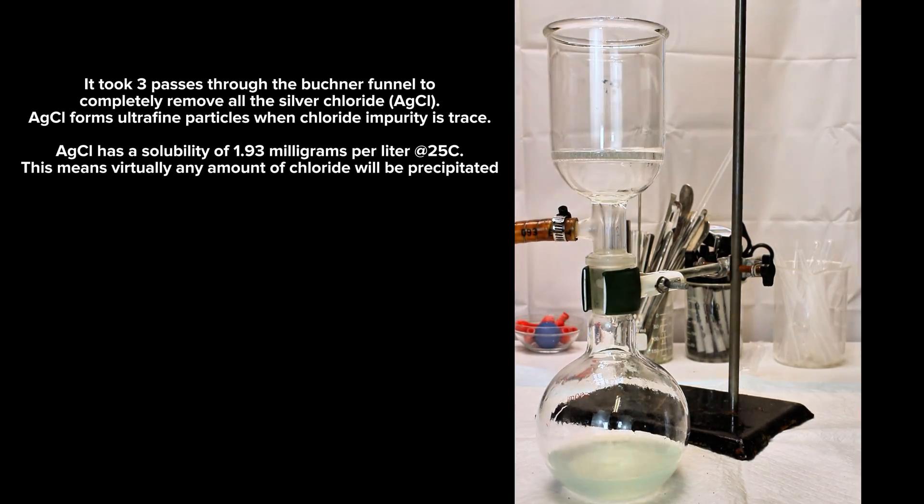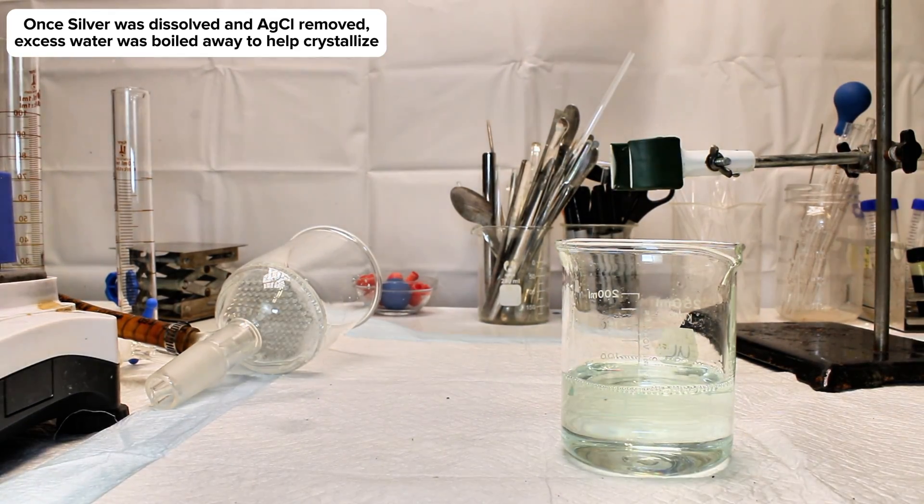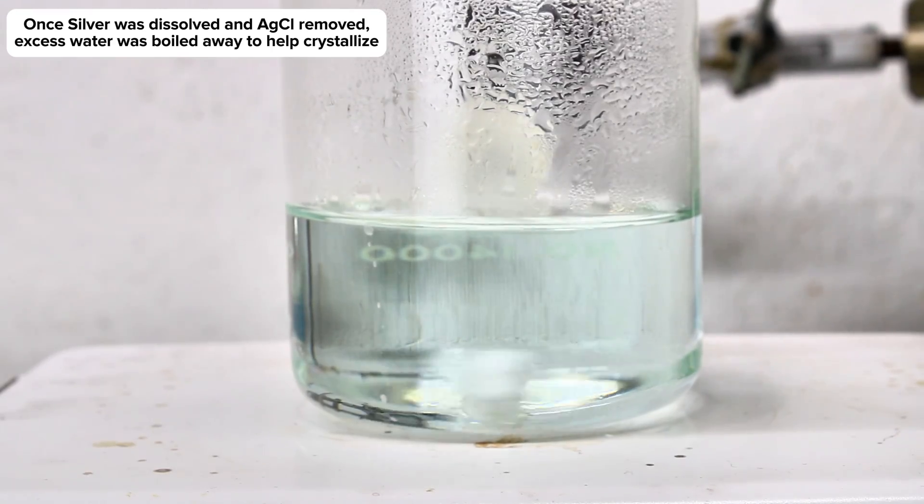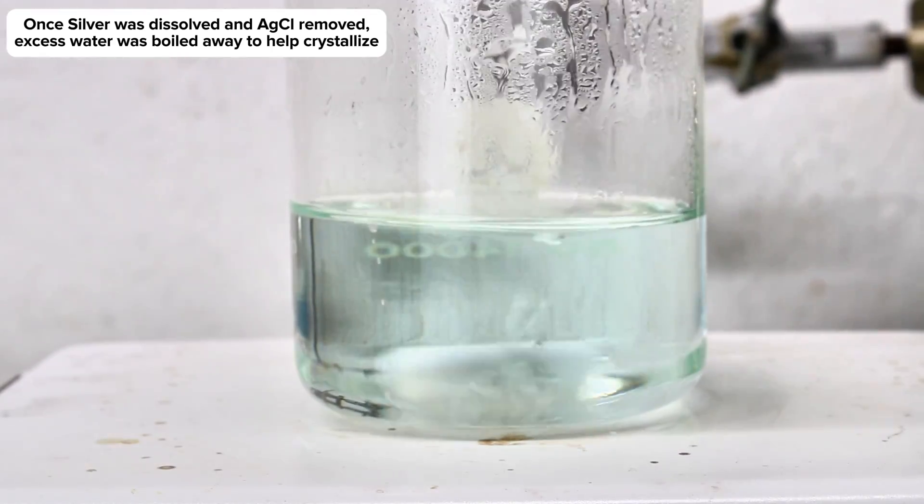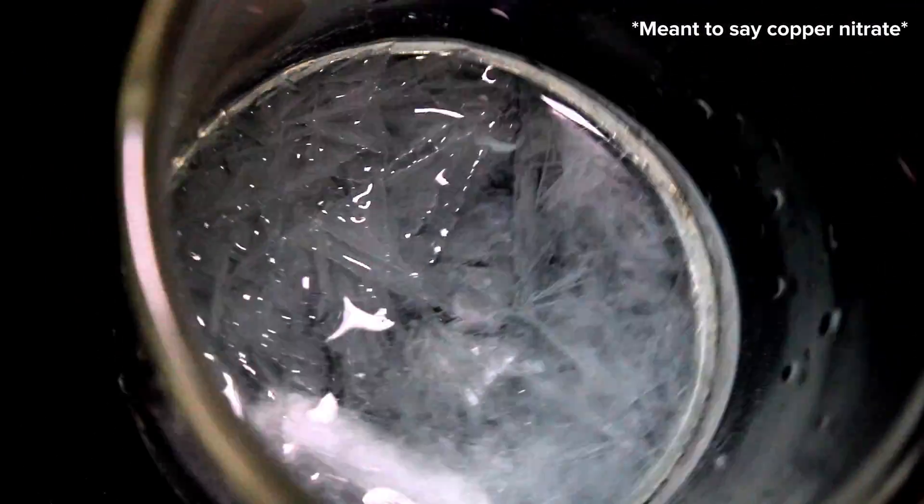On that note, once my silver was done dissolving, I simply passed the solution through vacuum filtration to remove the insoluble silver chloride. The resulting solution was then boiled down and allowed to cool, which allowed my silver nitrate to crystallize out while the extremely soluble copper chloride was left behind.